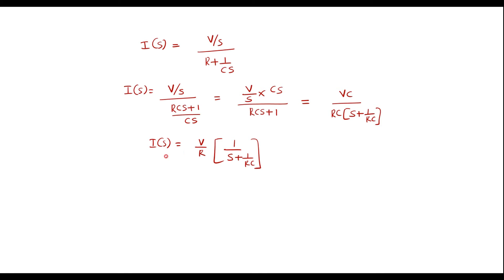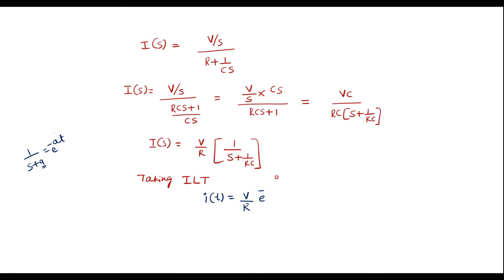Here V by R is constant. Now let me take the inverse Laplace transform of this expression. The inverse Laplace transform of 1 over S plus A is E power minus A T, where A is nothing but 1 over RC. So it is E power minus 1 over RC into T. This is the current expression: I of T is equal to V by R, E power minus 1 by RC into T.